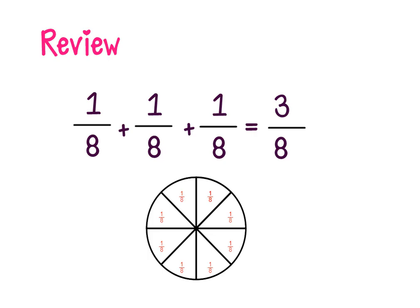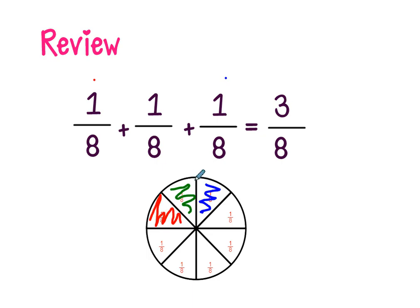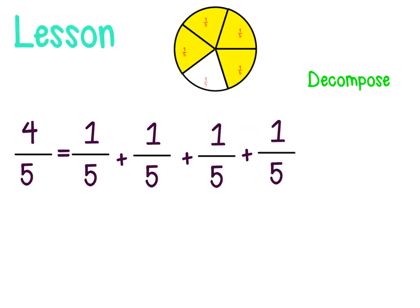Let's also review how to add fractions. If I color in one eighth, then add another one eighth, and another one eighth, all together — one eighth plus one eighth plus one eighth — we have a total of three eighths. When we add fractions, the denominator stays the same because the size of the piece is not changing; only the numerator changes to show how many pieces we have.